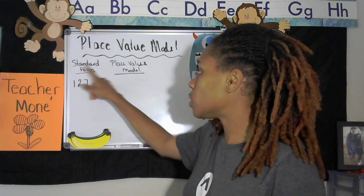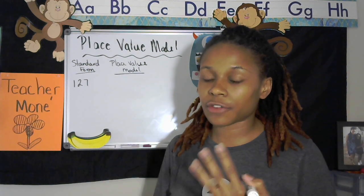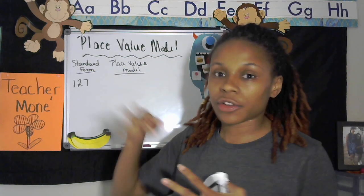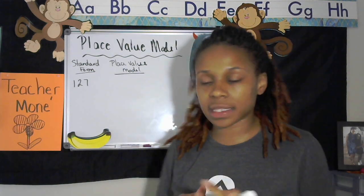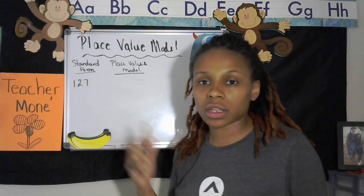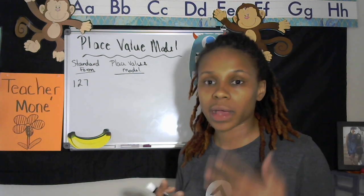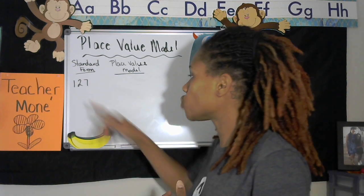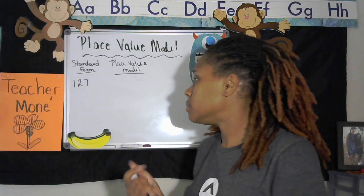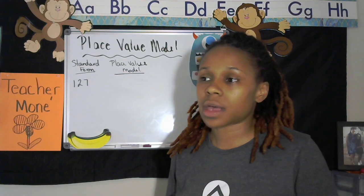I already have it set up here for standard form. In my previous videos I talked about what standard form, expanded form, and word form are. Standard form is just the number itself — the number I'm going to use today is 127. I'm going to show you the place value model, or picture drawing, to represent this number.